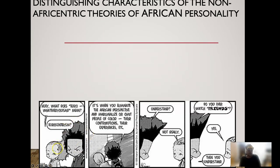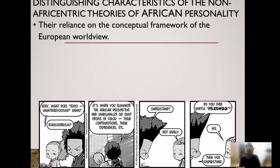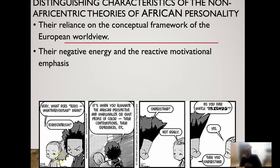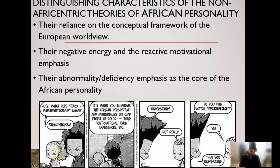Some distinguishing characteristics of non-Afrocentric theories of African personality include their reliance on the conceptual framework of the European worldview — not looking at how African people's personality develops separately from how European people see the world. They also rely on a negative energy and reactive motivational emphasis, which is something that Azibo broke down.